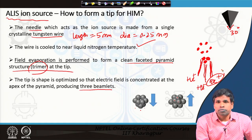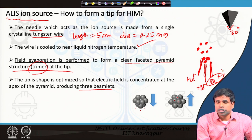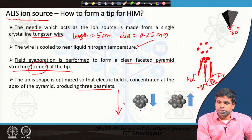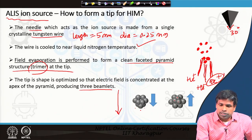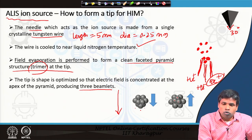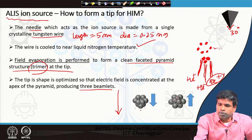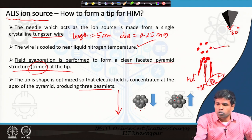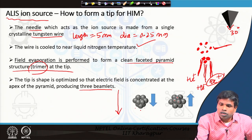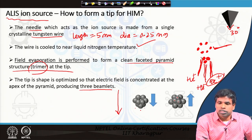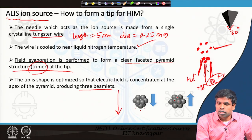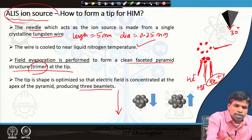A suitable aperture is used to select one of those beams to travel down the column and be incident on the specimen surface. If we apply more field to the tip, the atom will be evaporated, and then automatically another trimer will form. The condition is controlled such that another trimer forms and again starts producing a constant beamlet. This automatic faceting of the trimer at the tip was what was developed by ALIS Corporation.